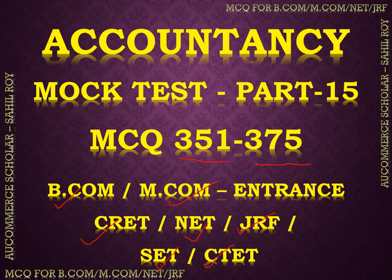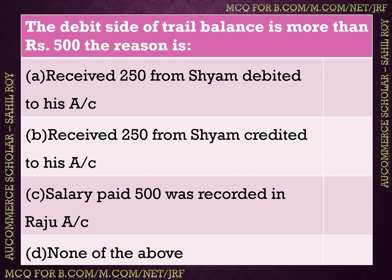Let's begin. Our first question: the debit side of the trial balance is more than the credit side by 500. The reason is that Sham's account was debited — meaning 250 rupees were debited to his account — and also 250 was received from Sham and credited to his account. So the correct answer is option A, where we received 250 from Sham but credited the amount to his account instead of debiting, causing the debit side to increase.